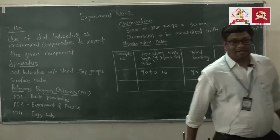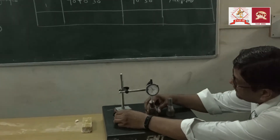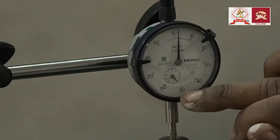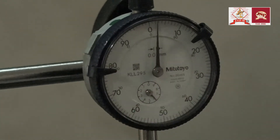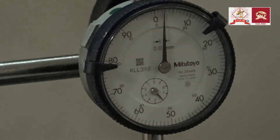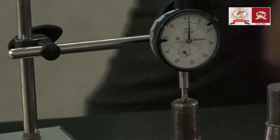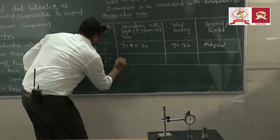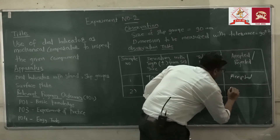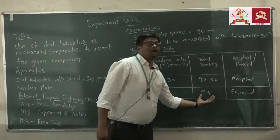Again take the second reading for the second job. Take another sample, place it below the plunger slowly, and take the reading. The reading is 94 mm. Note down the reading — sample two is 94 mm. This job is rejected because it is out of our tolerance.